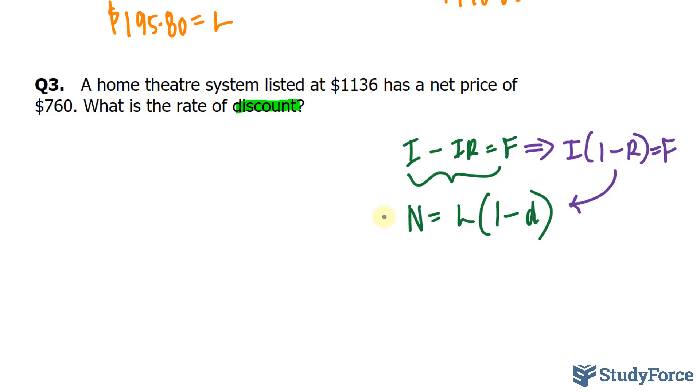So, we'll use this formula for the sake of simplicity. We're told that it is listed at 1136, and we're looking for the rate of discount, so it is little d that we're looking for, 1 take away d, and the net price is $760. So, all we have to do is solve for d.